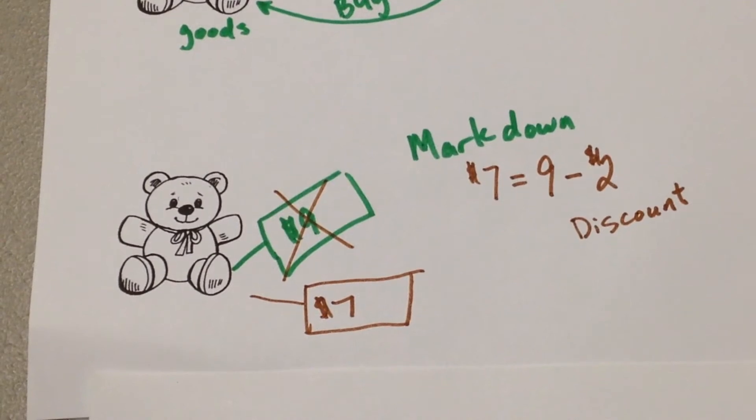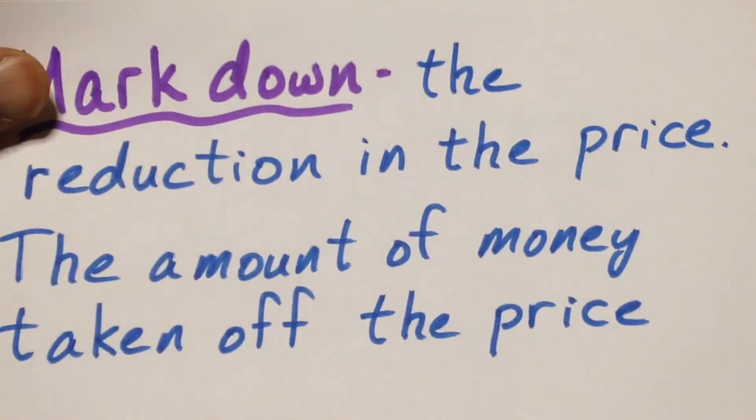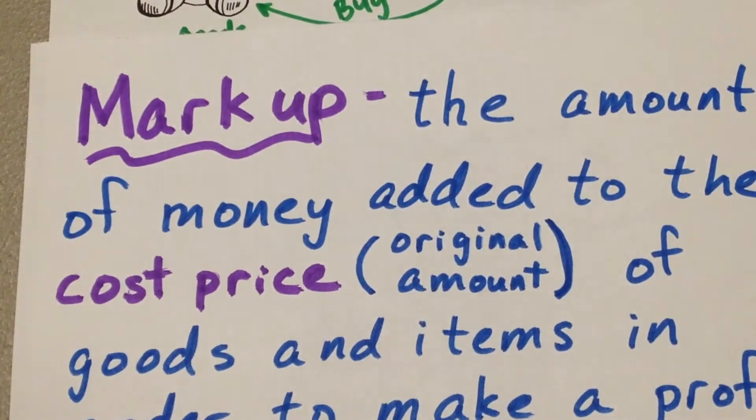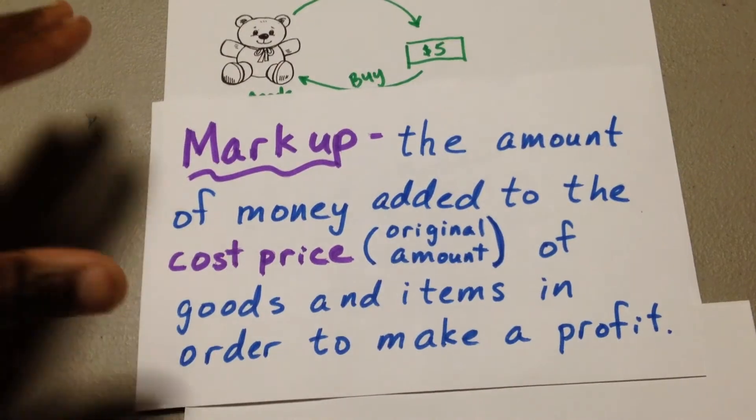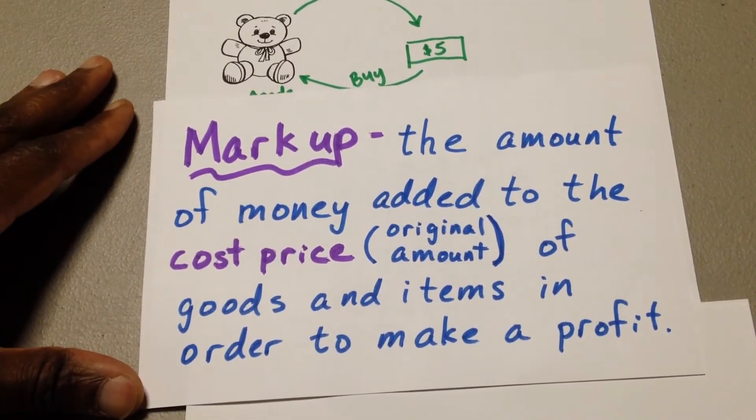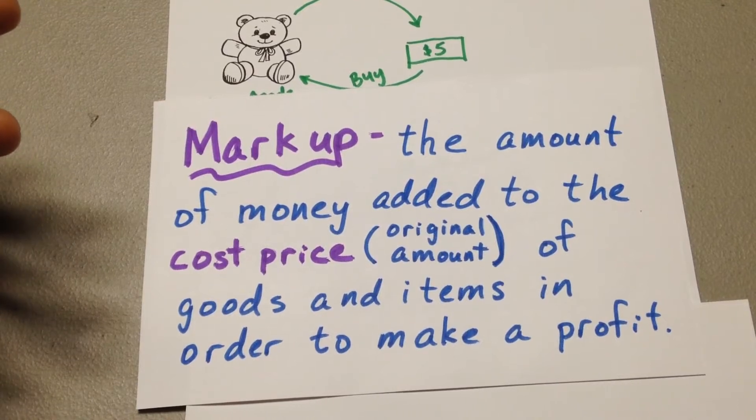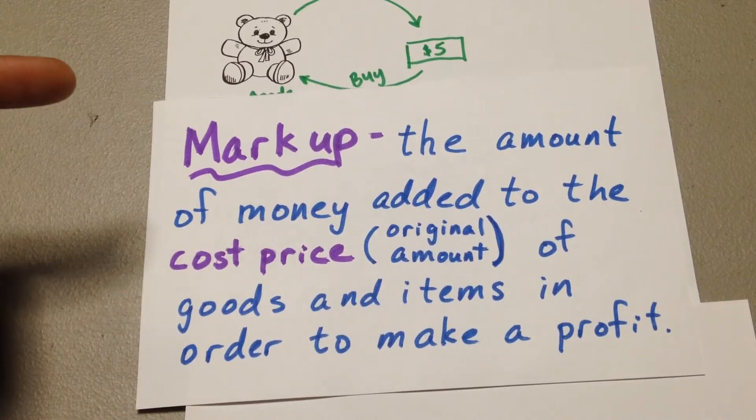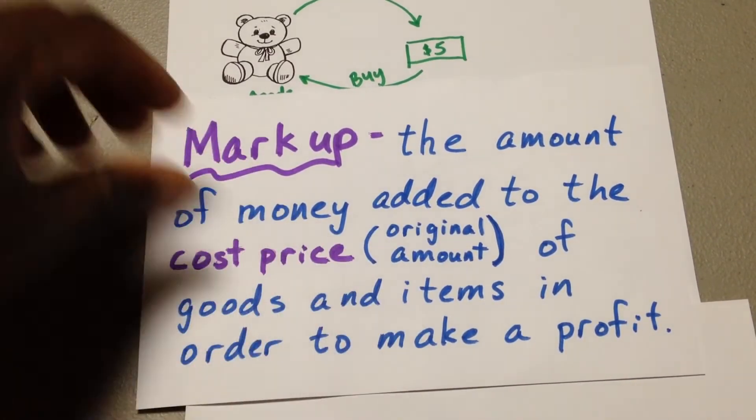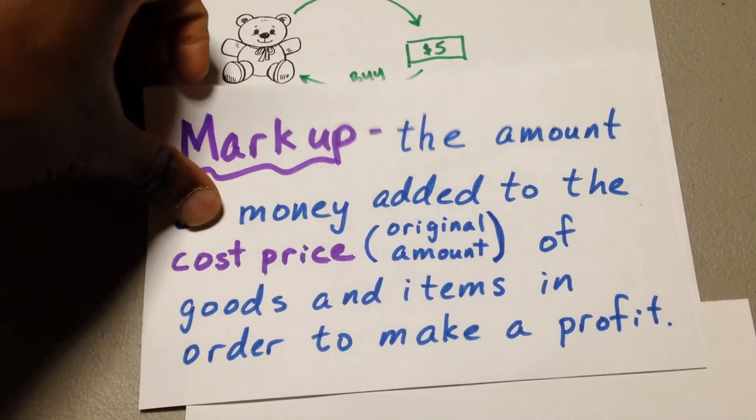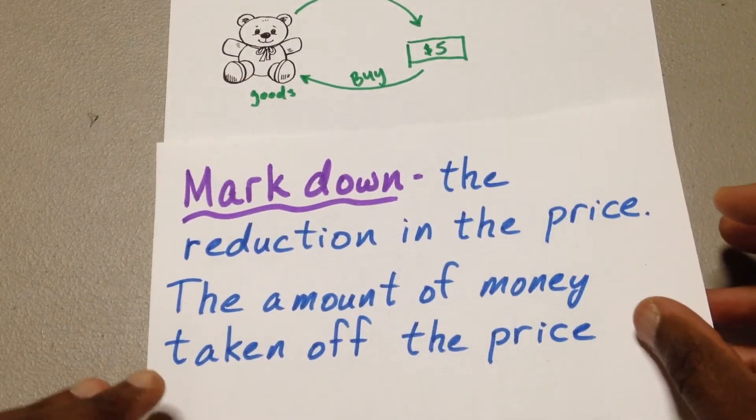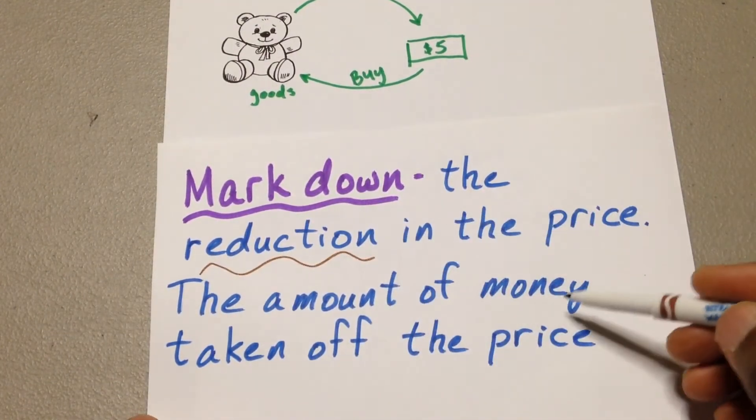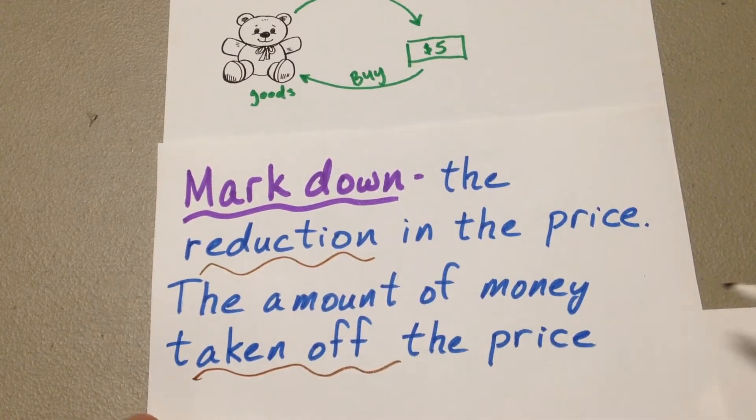So just to recap, a markup is the amount of money added to the cost price. The cost price is what we bought it for or the original amount. So the amount of money added to the cost price of the goods and items in order to make a profit. That's how we make our money. And when we have a markdown, a markdown is the reduction in the price - the amount of money that's being taken off the price.